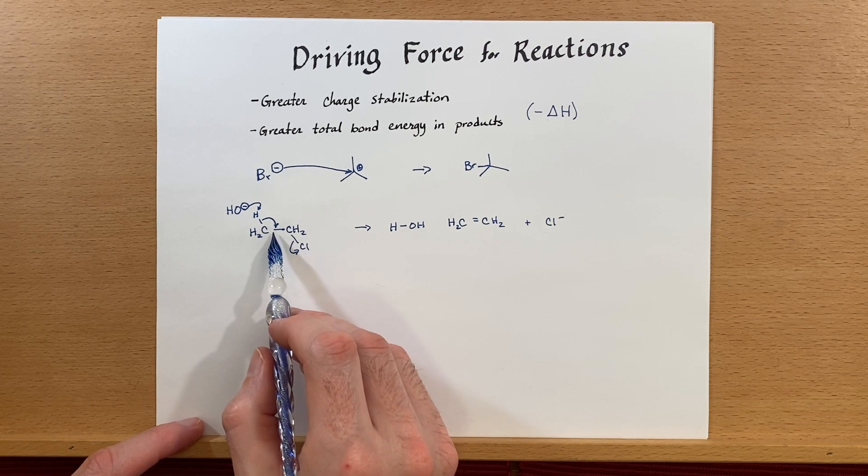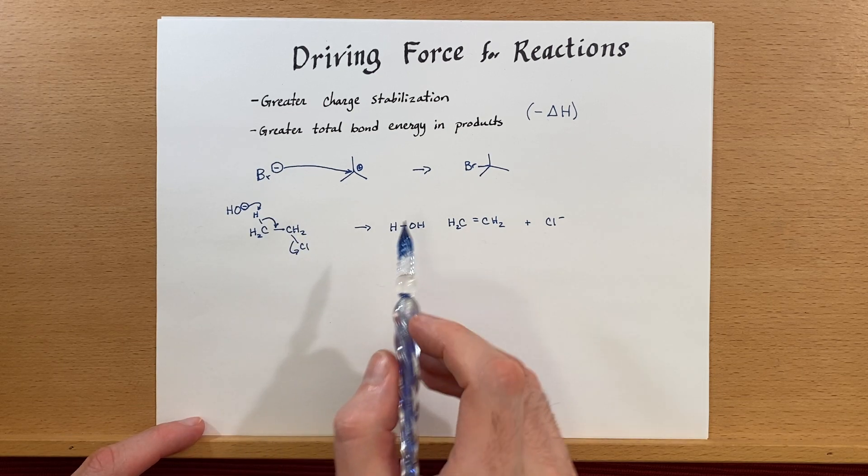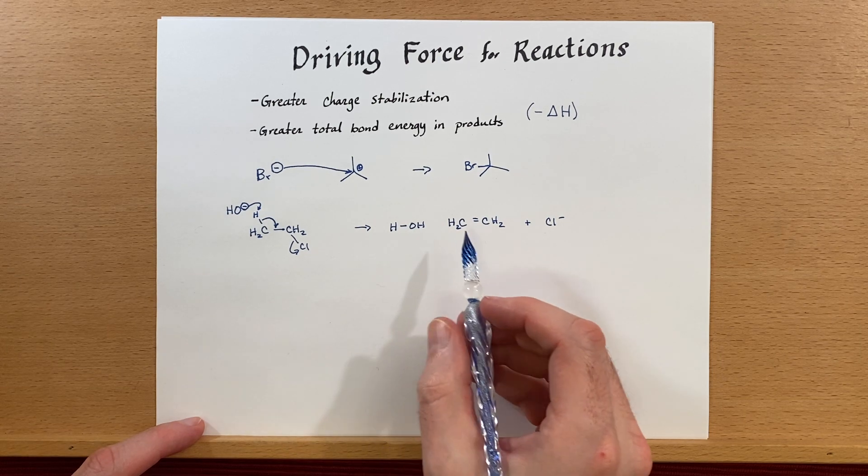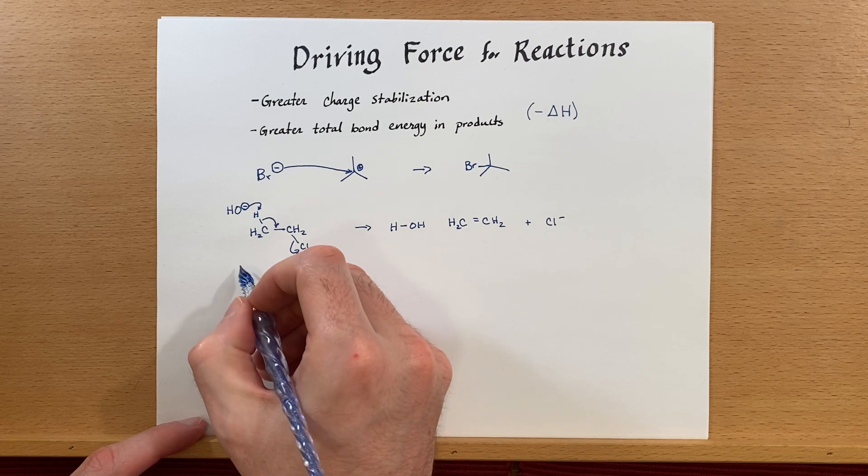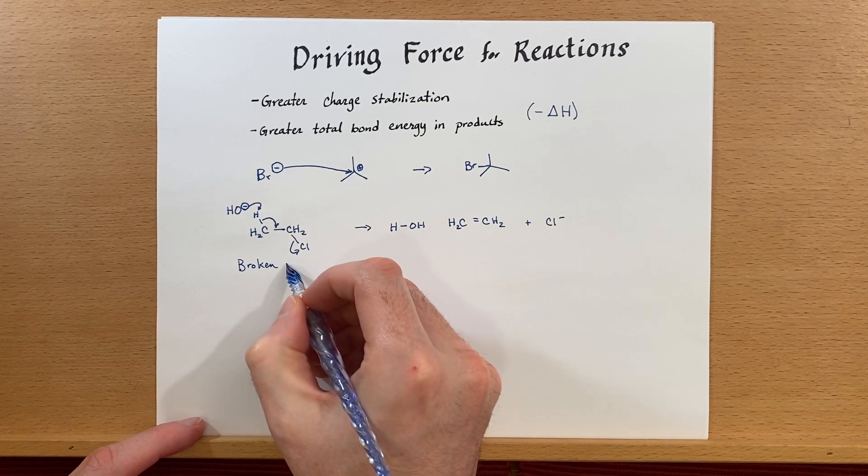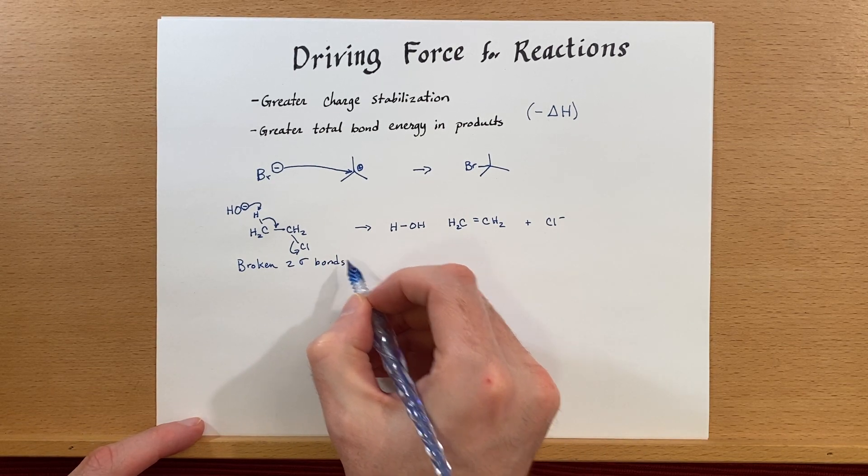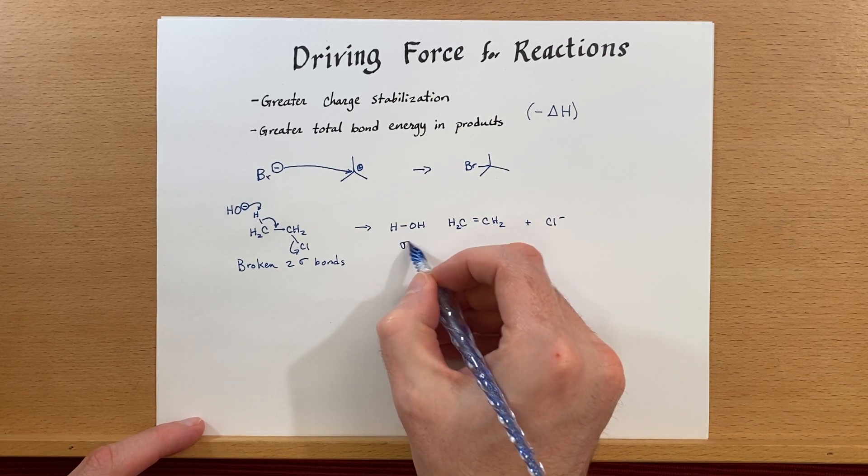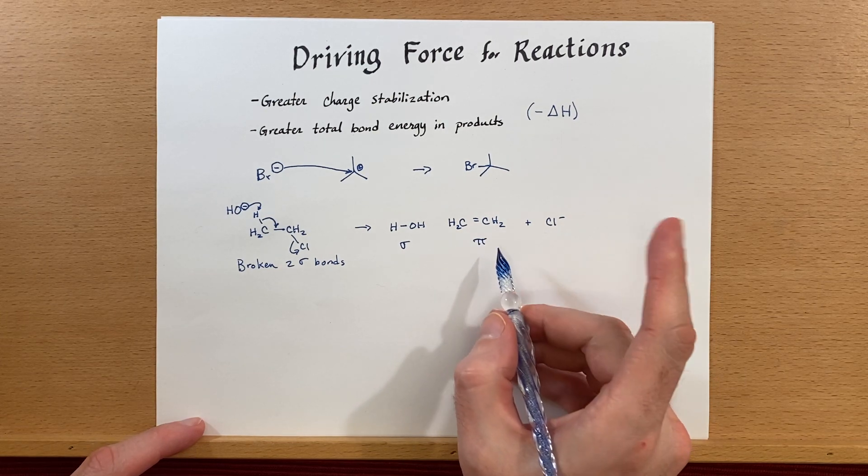We've made a pi bond between these two carbons, and we've made a sigma bond between hydrogen and oxygen, right here. So we have broken two sigma bonds, and over here we made a new sigma bond and we made a new pi bond.